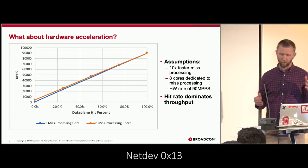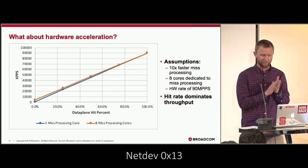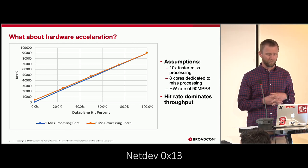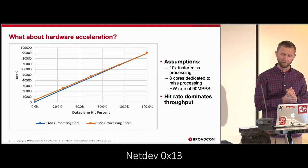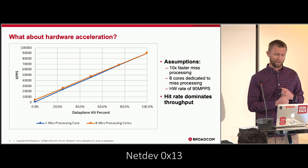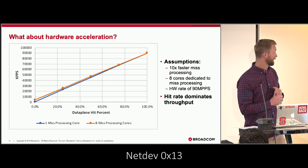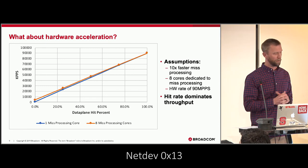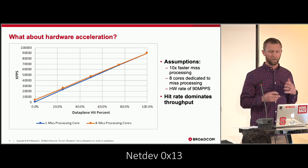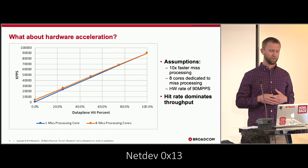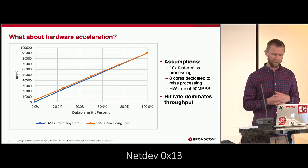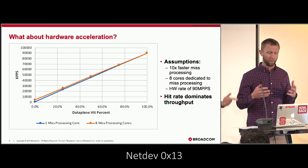This next slide is a projection from the maximum rate per core achievable, down to what you'd get at 100% miss rate. It shows the dramatic drop-off as the number of misses as a percent of traffic increases. As you have more and more churn in your flows, what is the impact on overall system behavior? One cure-all people think of is hardware acceleration — what if the data path is offloaded to hardware? Our maximum hardware rate would be 90 million packets per second on this device. With eight cores dedicated to processing misses — surprise — it's still pretty bad.